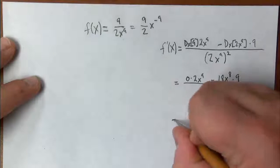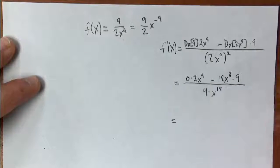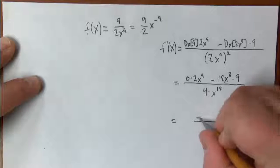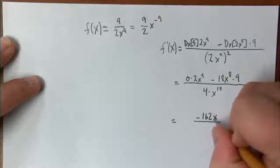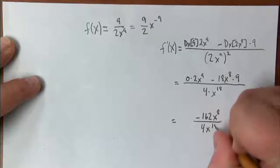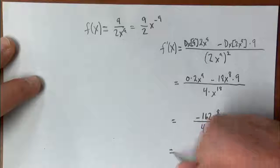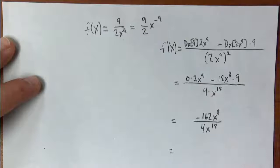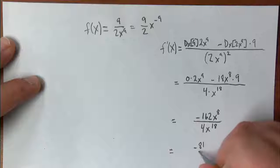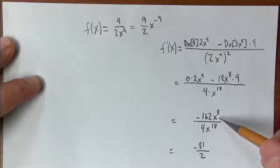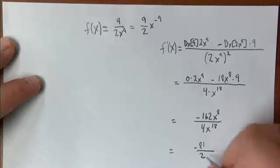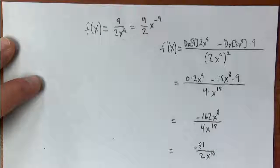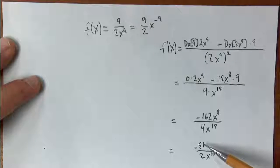On the bottom, we use the rules of exponents: 2 squared times x to the 9th squared gives us 4 times x to the 18th. Doing a little simplification, the derivative of 9 is 0, so we're left with negative 18 times 9, which is negative 162, times x to the 8th over 4x to the 18th. Both 162 and 4 are divisible by 2, giving us negative 81 over 2x to the 10th.